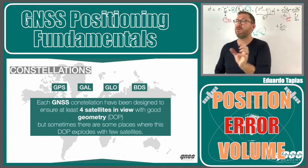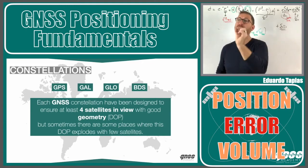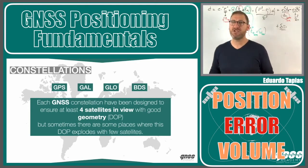The indicator of the geometry is what we call the DOP, dilution of precision. Then, in some places of the Earth, what happens, you are in the Atlantic Ocean, and sometimes the constellation is designed in such a way that we have four satellites, but they are very bad geometry conditions, and we have what we call chimneys.